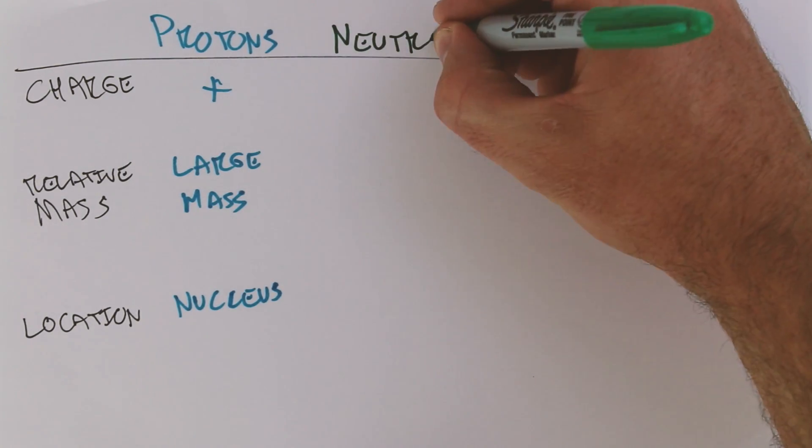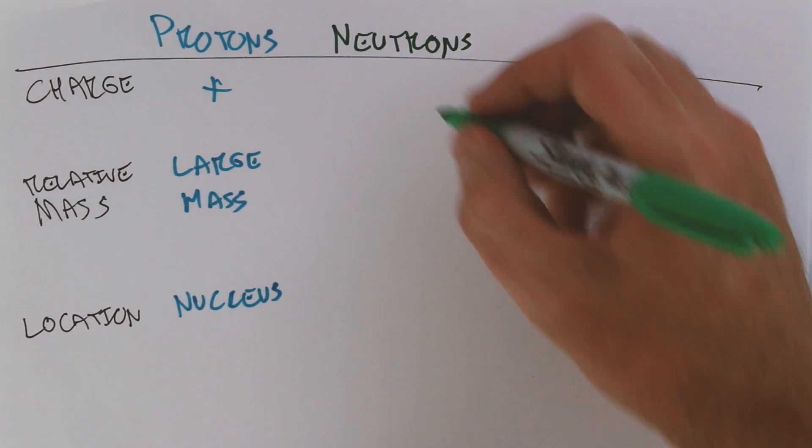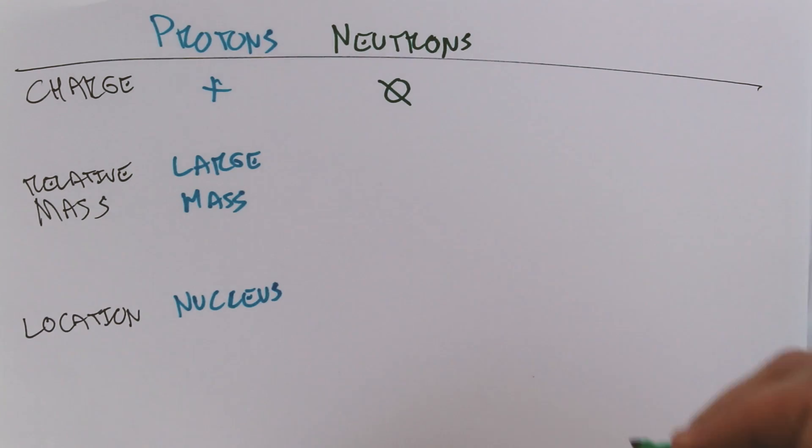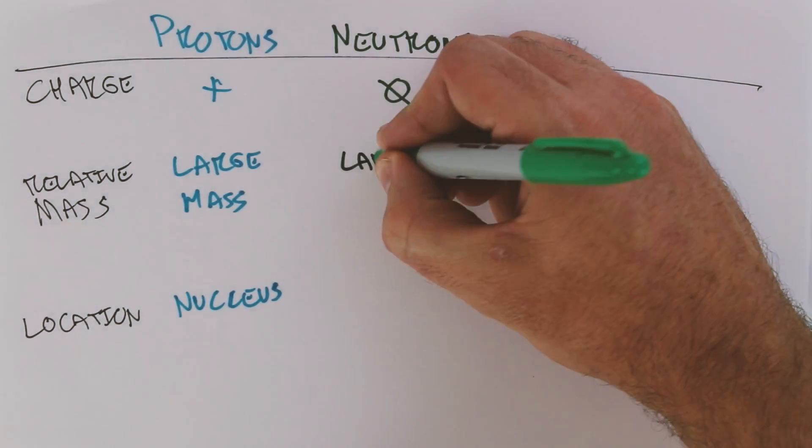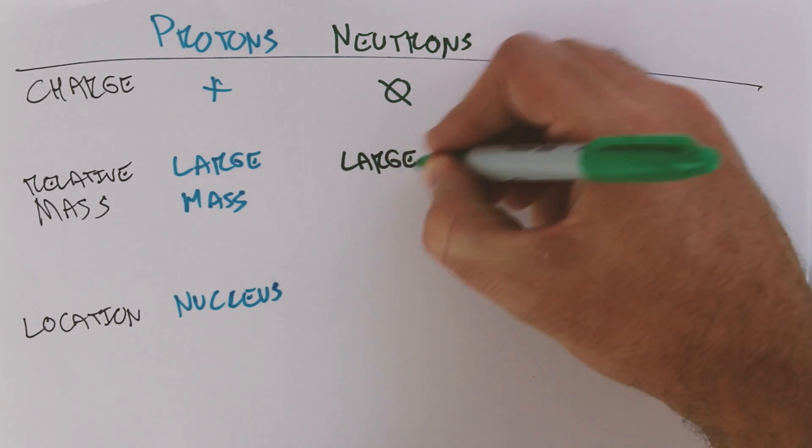Let's talk about neutrons next. So neutrons are neutral. They have no charge, a neutral charge. They also have a large mass.